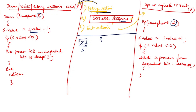Since s.value (2) is not less than 0, the process does not sleep and the return part executes — meaning P1 is added to the critical section. P1 enters the critical section. Meanwhile, P2 also comes and wants to enter the critical section. It executes the entry section code, decrementing the semaphore to 1. Since 1 is not less than 0, P2 also enters the critical section.